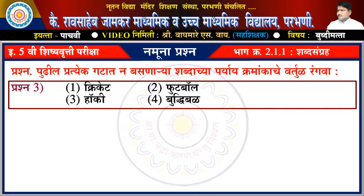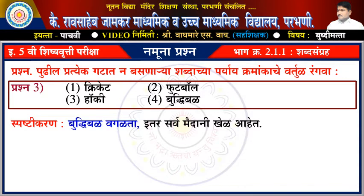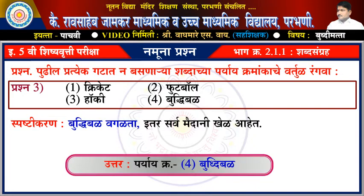પ્રશ્ન તીસ્રા: એક ક્રિકેટ, દોન ફૂટ્બોલ, તીન હોકી, ચાર બુદ્ધિબળ. દિલેલ્યા પર્યાયાંपৈकी બુદ્ધિબળ વગળતા ઇતર સર્વ મૈદાની ખેળ આહેત. ઉત્તર: પર્યાય ક્રમાંક ચાર - બુદ્ધિબળ.